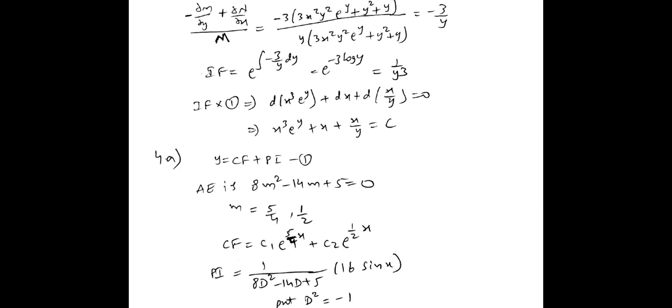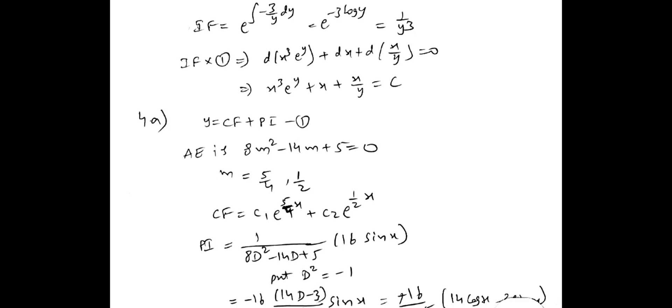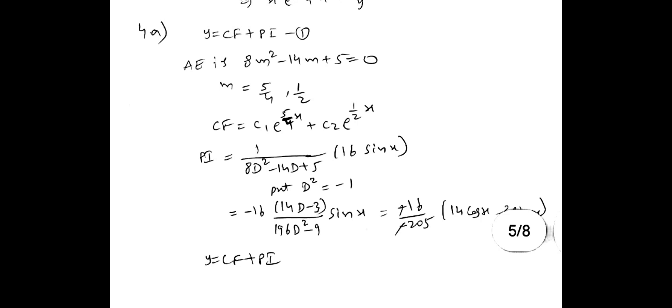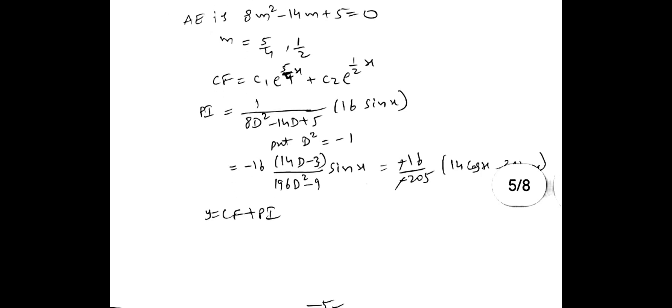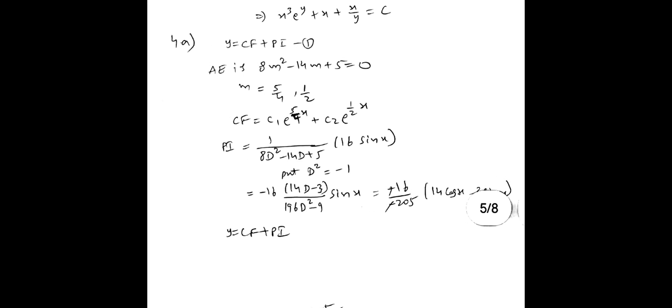Then fourth my A bit. You have to find complementary function and particular integral. Roots you get 5 by 4 and 1 by 2. So then particular integral sine to sine x by 16 sine x. So a value is 1 here. In place of d square you have to write minus of a square. Minus will get 8. Again here you rationalize it. You will get the answer. This is the fourth my A bit. These are little bit direct questions. Direct answers not questions. Direct answers.